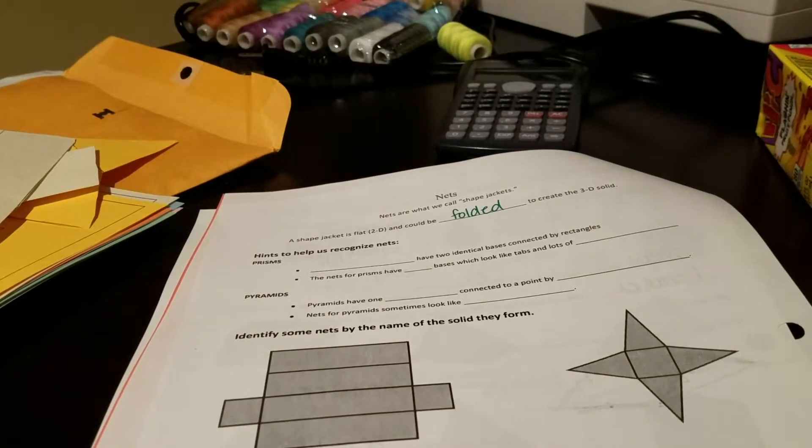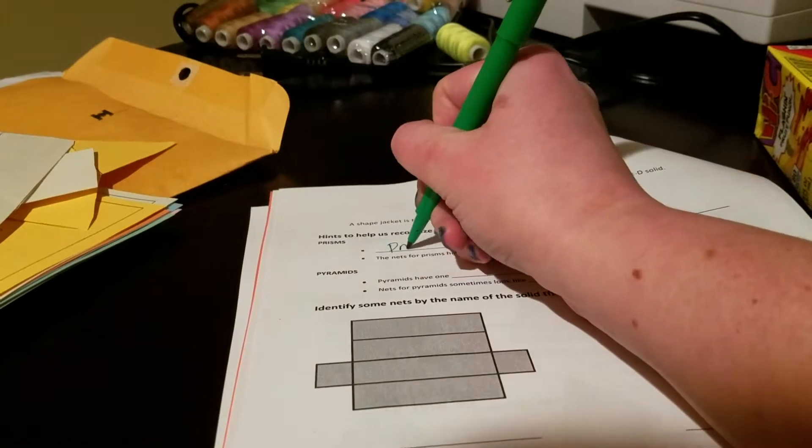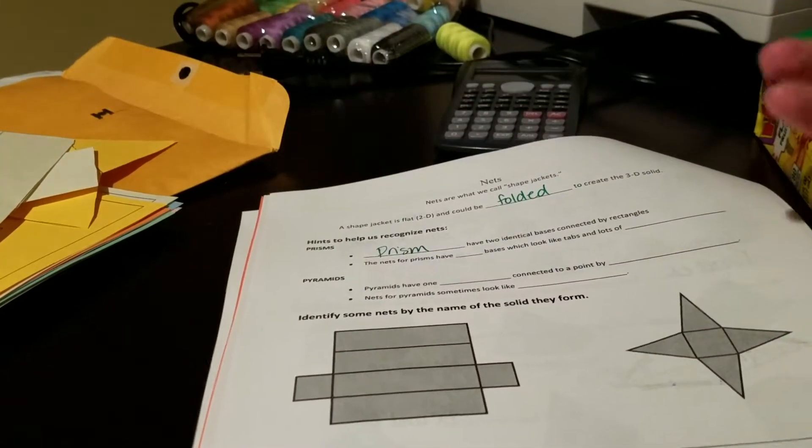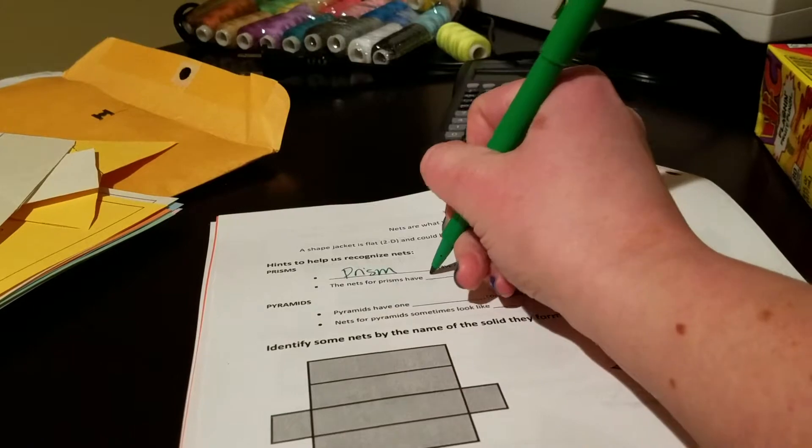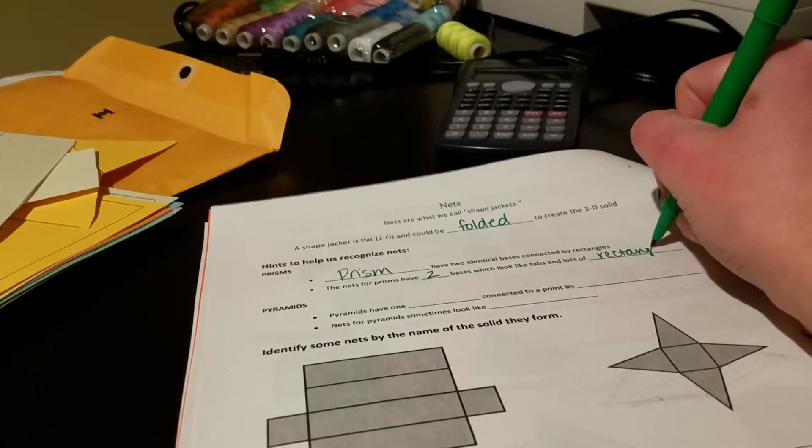So there are some ways to kind of help us recognize them. If we're talking about a prism, they're going to have two identical bases connected all by rectangles. The nets for prisms are going to have two bases that are going to look like little tabs, and lots of rectangles on them.